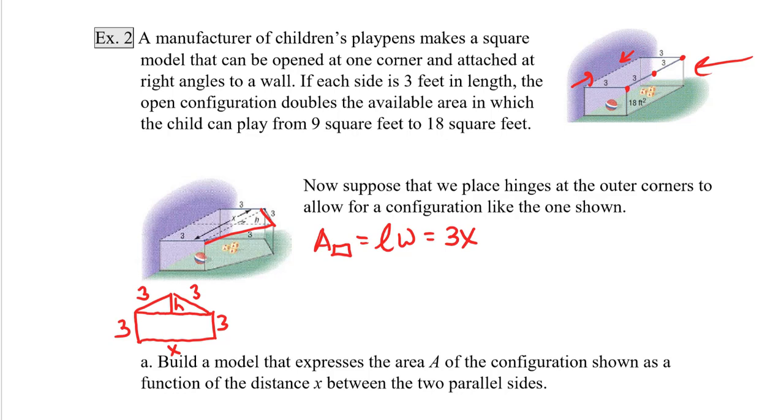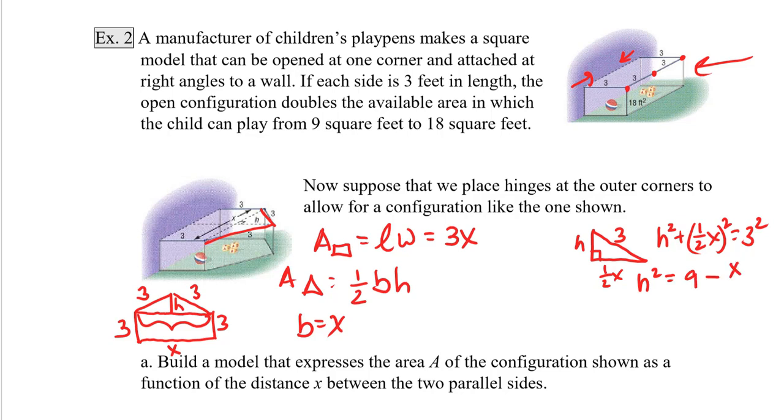Now the triangle is a little more challenging. We know that the area of a triangle is 1/2 the base times the height. Now in this picture, the base is equal to x, but the height is trickier. So let's just take a little triangle out of the big triangle. We know that this side would be h, we know the hypotenuse would be 3, and we know that since we've cut the base in half, this would have to be 1/2 x. Now because the height is perpendicular to the base, we know that this is a right triangle. So we can use Pythagorean theorem to form a relationship between the sides. So we know then that h squared plus (1/2 x) squared is equal to 3 squared. So if we solve this for h squared, we get h squared is equal to 9 minus x squared over 4.